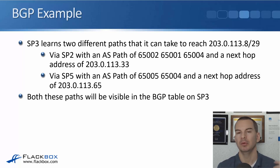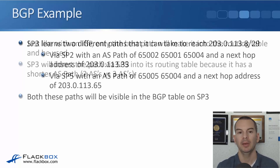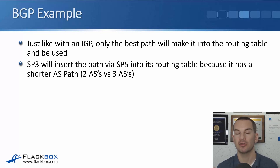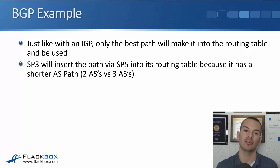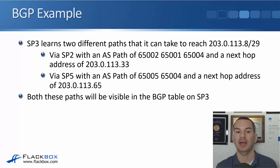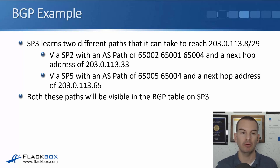Both routes are learned via BGP and go into the BGP table — similar to how the OSPF database works for OSPF. Only the best path makes it into the routing table. SP3 chooses the path via SP5 because it has a shorter AS path: via SP2 traverses three ASes (65002, 65001, 65004), while via SP5 is only two (65005, 65004).